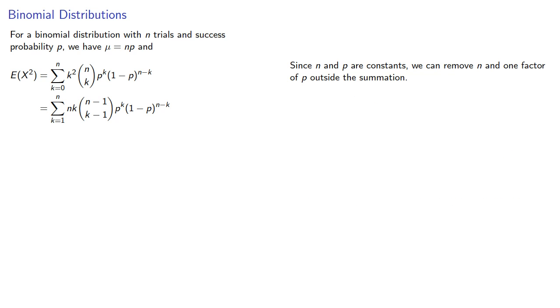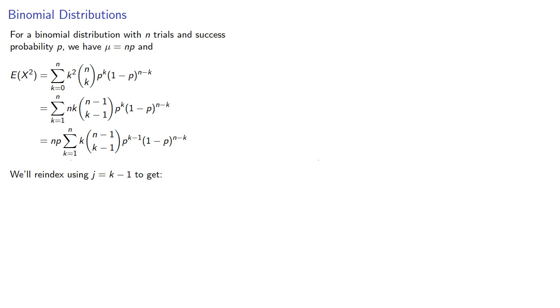Again, n and p are constant, so we can remove n and one factor of p outside the summation. And we'll re-index using j equal to k minus 1, and this will give us...